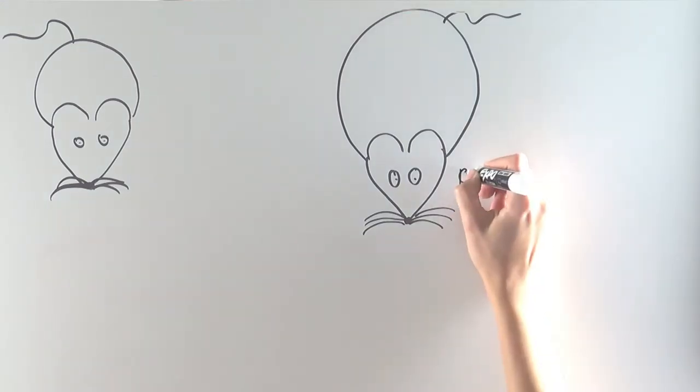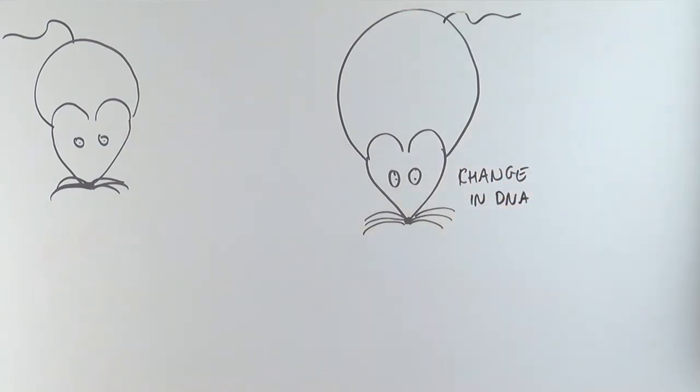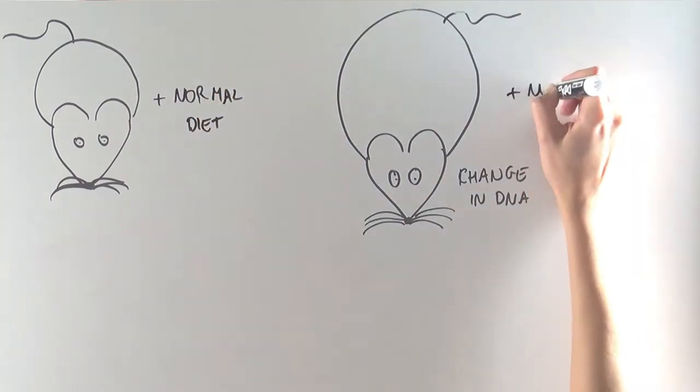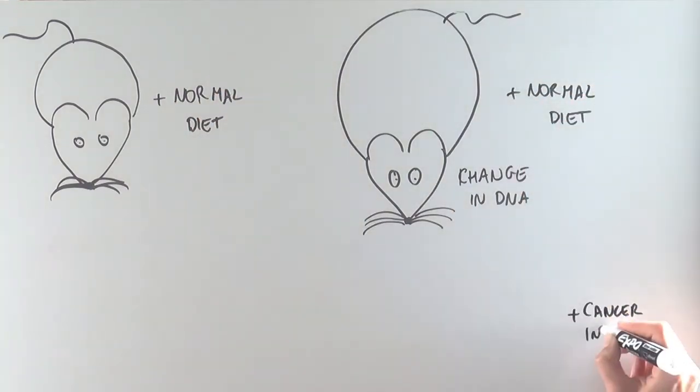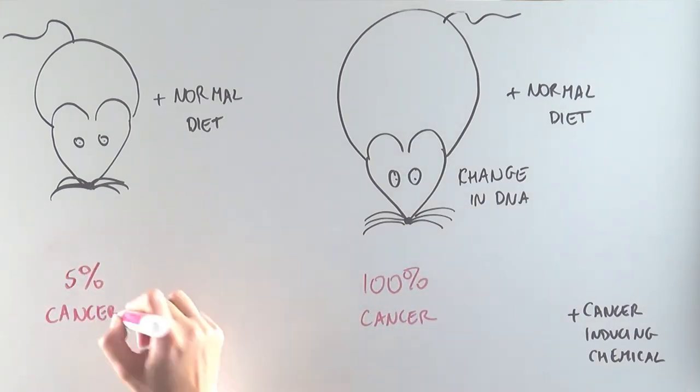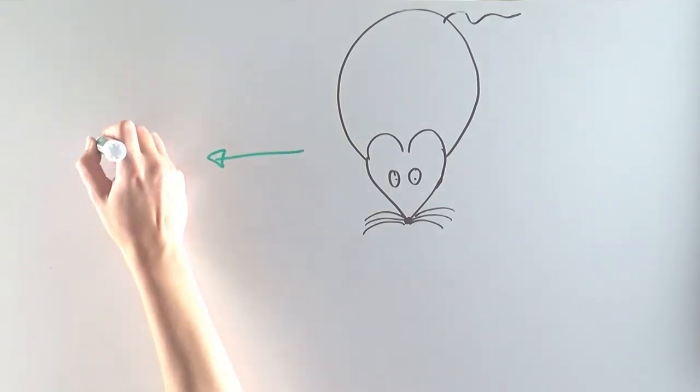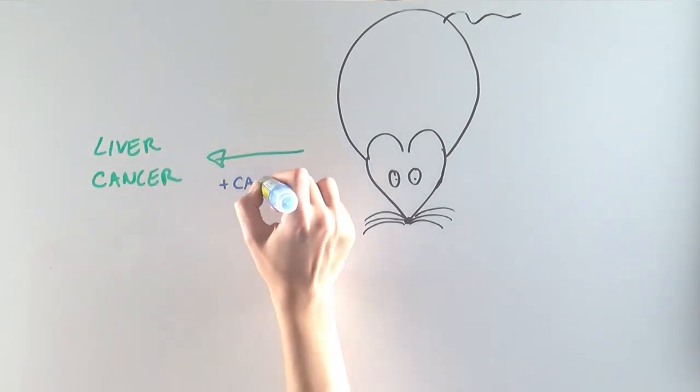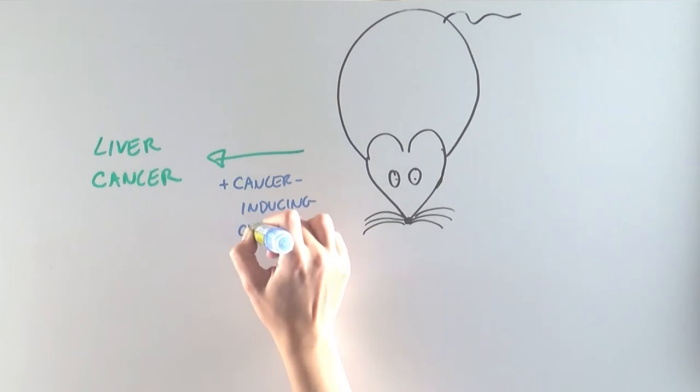To answer this question, the scientists looked at mice that were obese due to changes in their DNA sequence, but that ate a normal diet. These mice were also more likely to develop cancer with a cancer-causing chemical than non-obese mice. So this suggests that obesity can promote the development of liver cancer when a trigger, in this case a cancer-causing chemical, was provided.